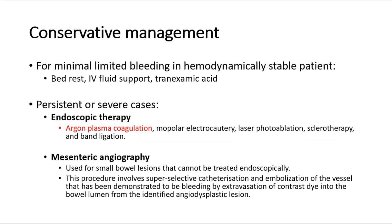For conservative management, in cases of minimal or limited bleeding in a hemodynamically stable patient, offer bed rest, IV fluid support, and tranexamic acid. For persistent or severe bleeding cases, we can offer endoscopic therapy or mesenteric angiography. Endoscopy is usually the first line of management, with the most widely used technique being argon plasma coagulation.